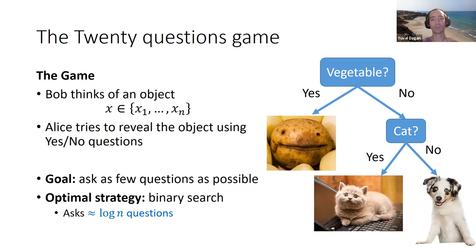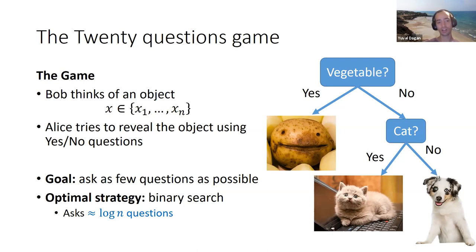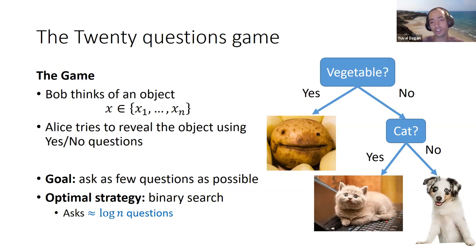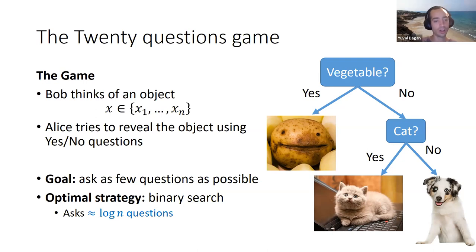Alice's goal is to reveal this object using yes-no questions. First, Alice will ask whether this is a vegetable. If the answer is yes, then she knows that the object is a potato; otherwise she can ask another question that distinguishes between the cat and the dog. In this simple variant, the goal of Alice is to ask as few questions as possible. The optimal strategy is binary search over some ordering of the objects, which asks log n questions.